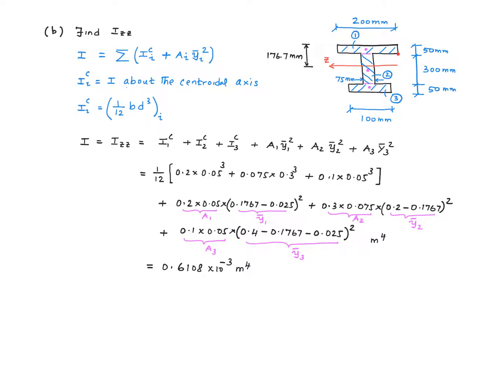And the distance to the centroid of that little sub-area from the z-axis would be this distance. So that'll be 0.1767 meter minus half the thickness of this flange, which is 0.025. So that's what I have over here. So you square that. So when it's said and done, we have a value of 0.6108 times 10 to the minus 3 meter to the power of 4 for izz.